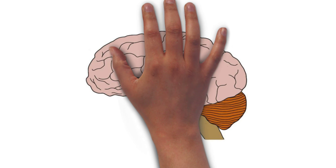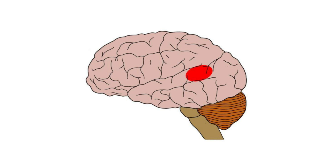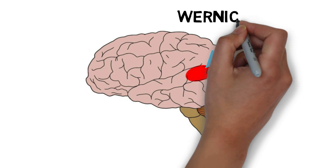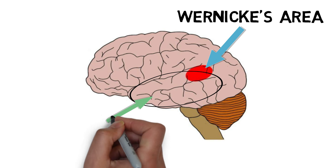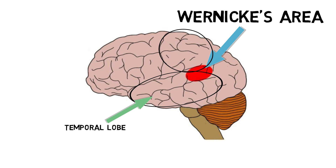Although there is some debate over the exact location of Wernicke's area, it is typically considered to reside in the cortex of the left cerebral hemisphere, near the junction between the temporal and parietal lobes.